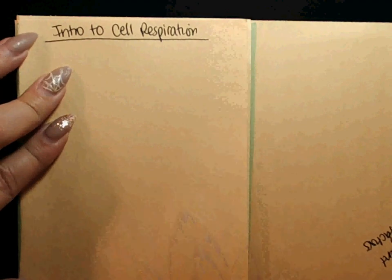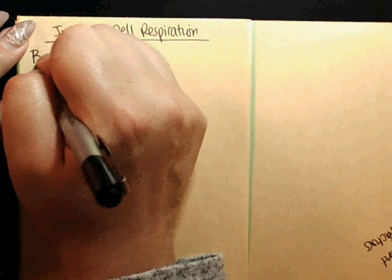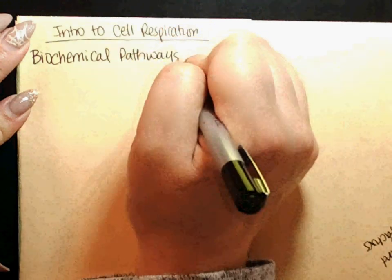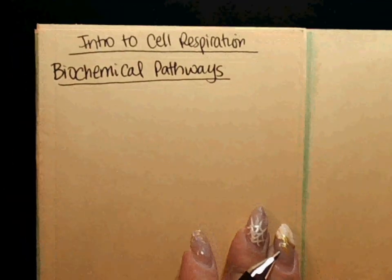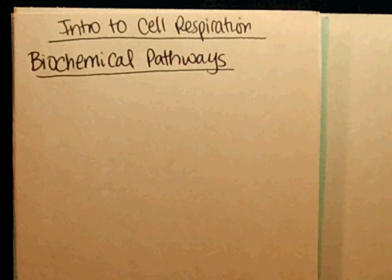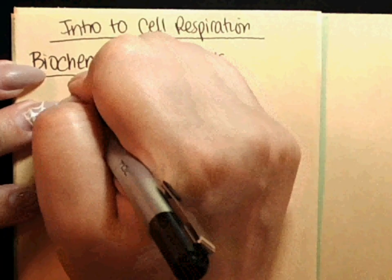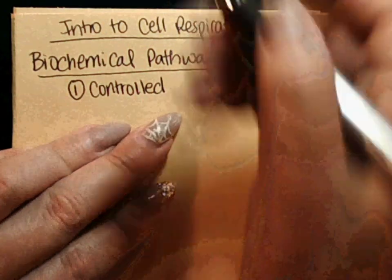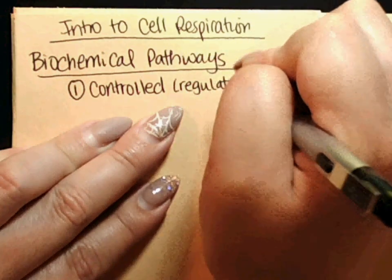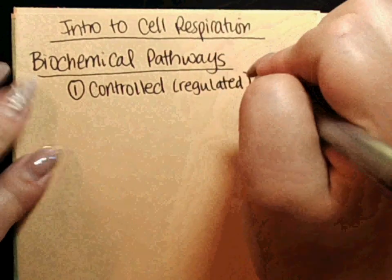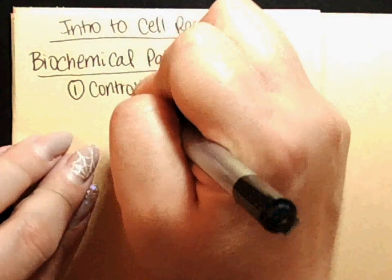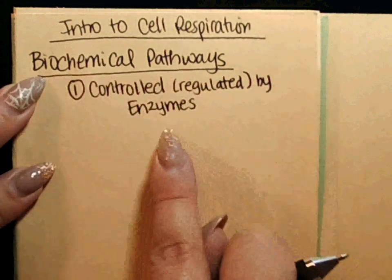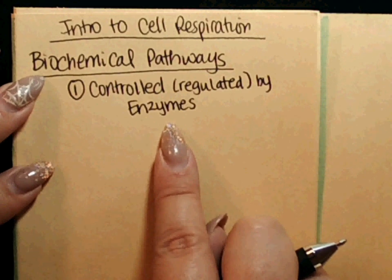In this video I'm going to give you an introduction to cell respiration. The first thing I want to go over is biochemical pathways, which we covered a few class periods ago. These biochemical pathways are controlled by enzymes — on the AP exam you'll also see the word 'regulated,' which means the same thing. There's no fixed number of enzymes per pathway; some have ten, some have two, some have five.